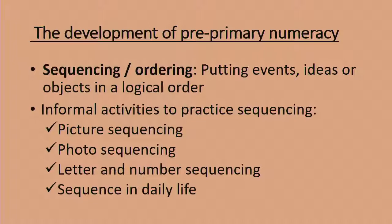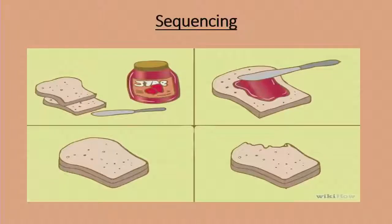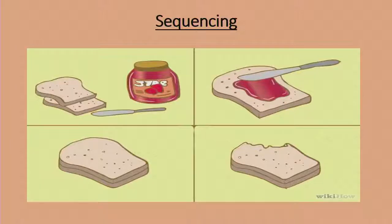Picture sequencing: we can have pictures of, for example, how to make a sandwich. The child puts those pictures in a sequence — the one that comes first: take out the bread, then take out the jam, put the jam on the bread, and then eat the bread. That is how I can practice sequencing. Photo sequencing: I can ask my child to bring pictures from home, from when they were a little baby up to the age they are now — even just three or four pictures — and put those in sequence.